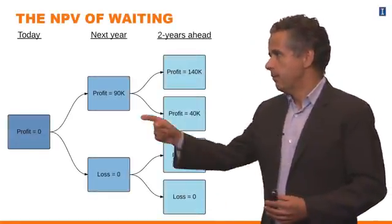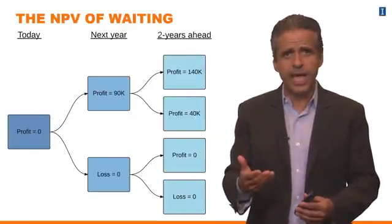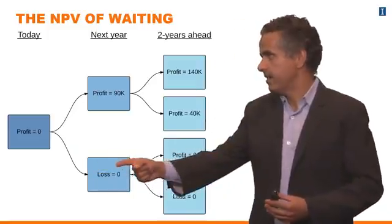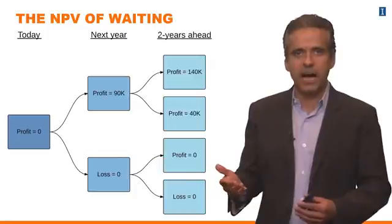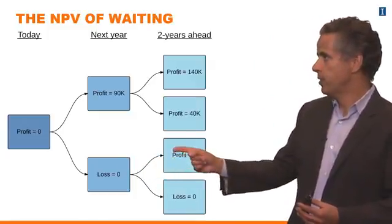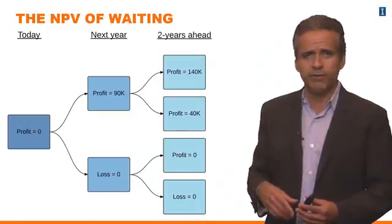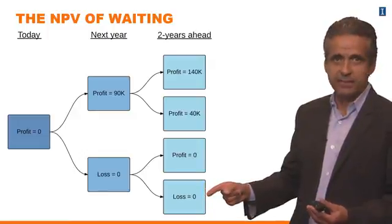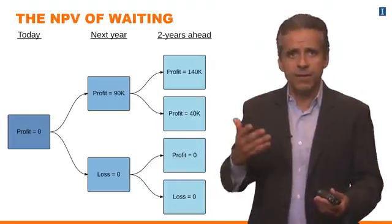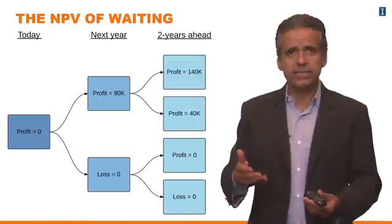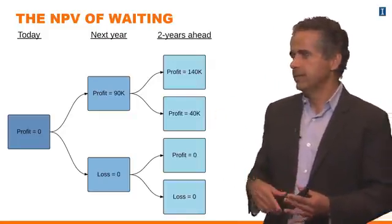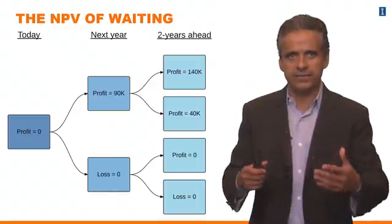If you don't open today, you give up today's profit — you get zero instead of $40,000. The benefit is that the bad state where the gold price is low and the mine loses money is now avoided: you simply don't open in that scenario. Moving to period two, if the gold price is too low you again get zero by not opening, avoiding that loss. You only open the mine when it's profitable, guaranteeing a profitable outcome. That's how the profit tree for the waiting option should look.